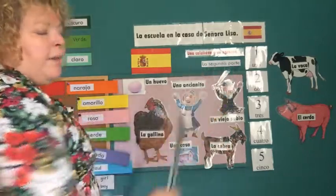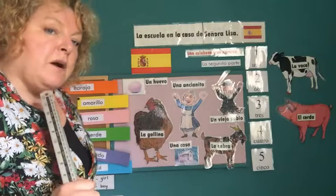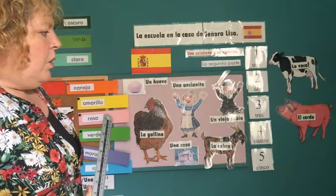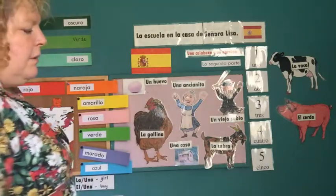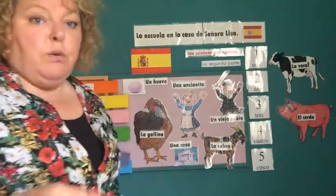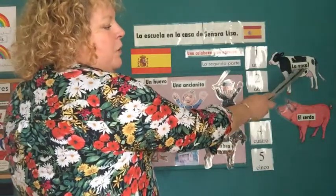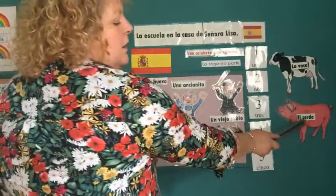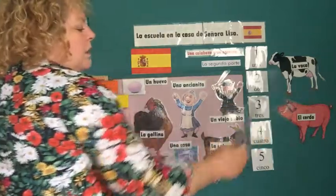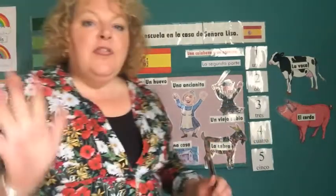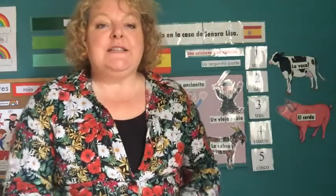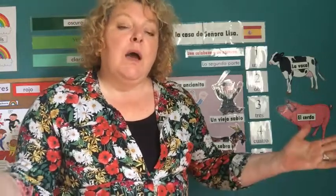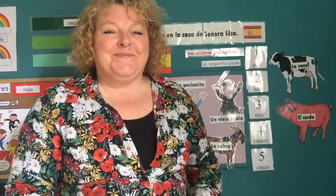Vale, esa es la segunda parte. I wonder what's going to happen in the third part. The third part will introduce another animal - in fact I think it's going to introduce both of them. So we've got la vaca - remember the V is a B - and el cerdo. The curly c says F. We've got the cow and the pig to come. Thank you all for joining me for Spanish. I hope to see you in a fortnight's time - remember that's two weeks. Please look after yourselves. Bye!